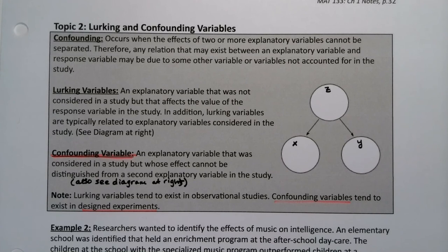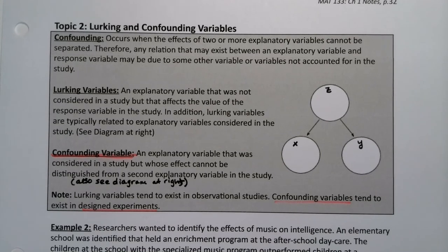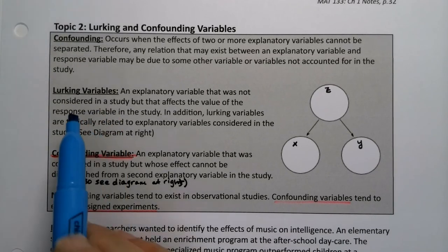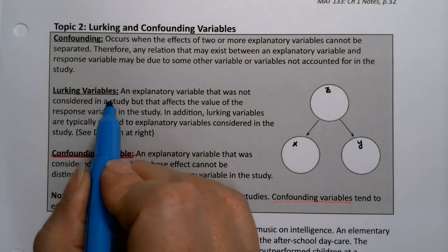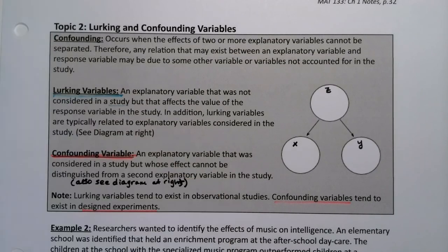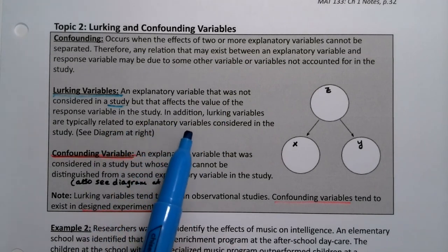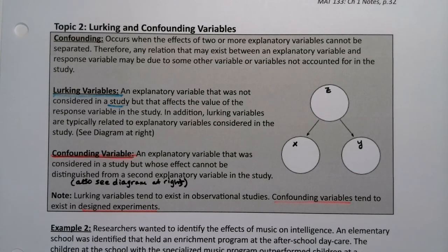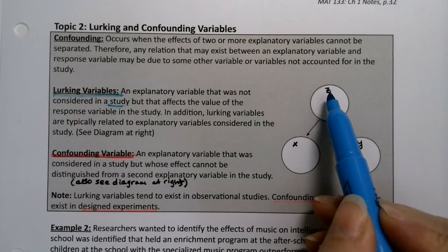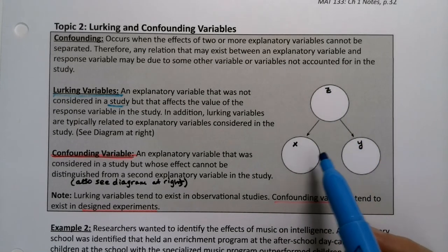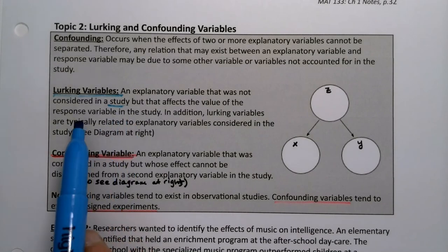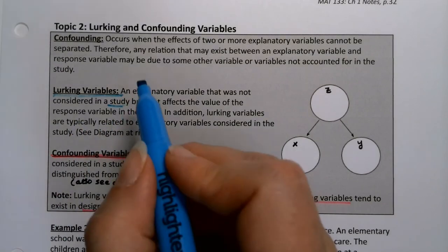What's the difference between lurking and confounding? It's more based on the philosophy of what you're thinking about. A lurking variable tends to be in an observational study — it's lurking in the background. It affects the response variable, and it can be related to an explanatory variable. So you have one variable Z, that lurking variable, affecting both your X and your Y — it has some relationship with both the response variable and the explanatory variable.